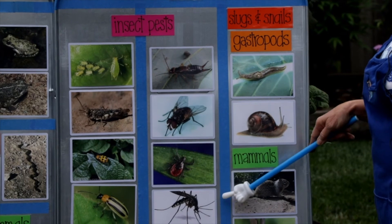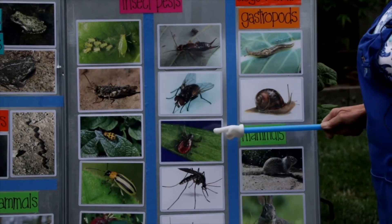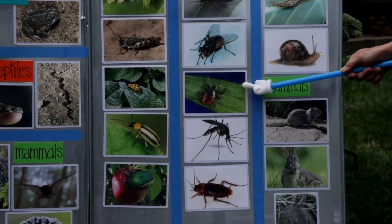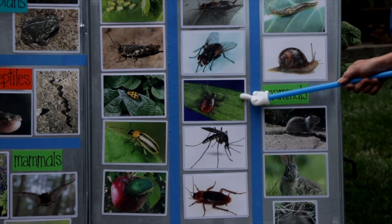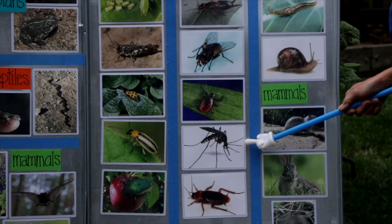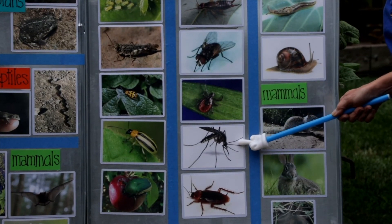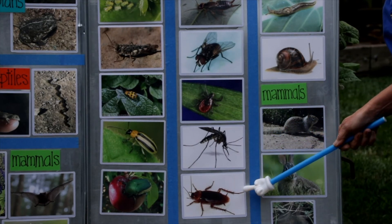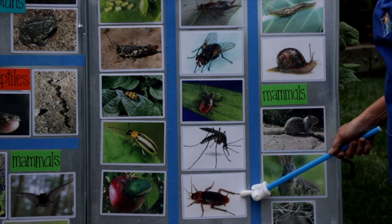The next three are what are called vectors — carriers of disease for people. This is a deer tick; it carries Lyme disease, so you don't want that guy around. Then there's the mosquito, which carries a number of different diseases and just plain hurts when it bites. And the cockroach — you don't want those guys anywhere close to you.